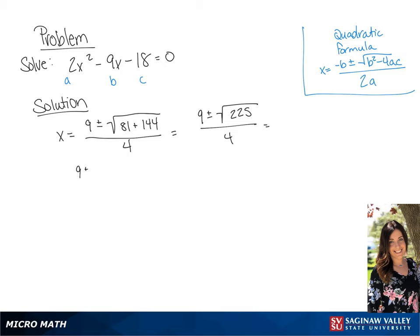The square root of 225 is 15, so this will give us 9 plus or minus 15 all over 4.